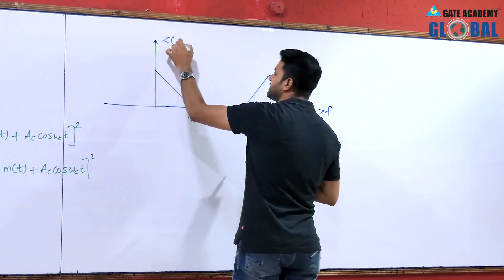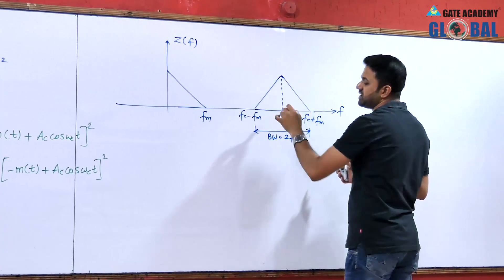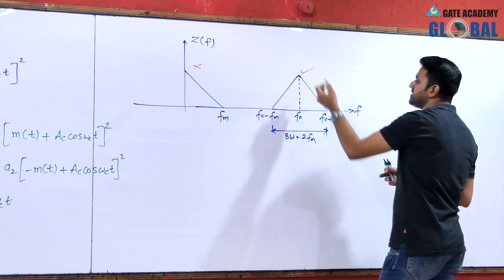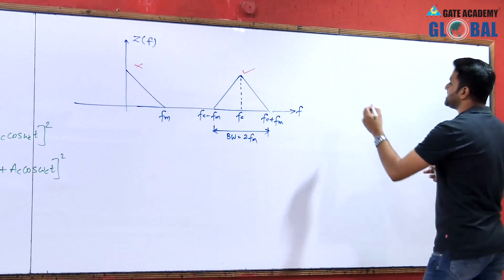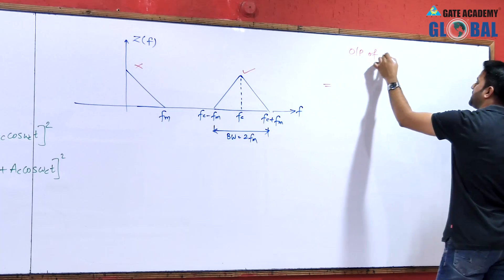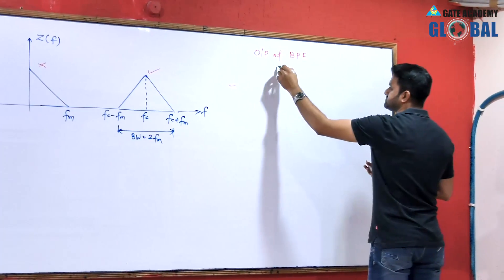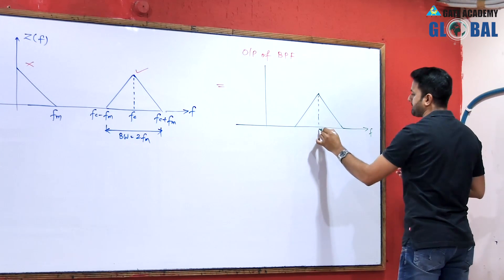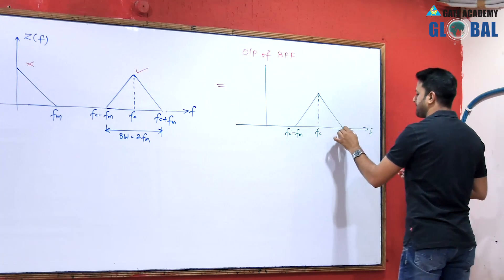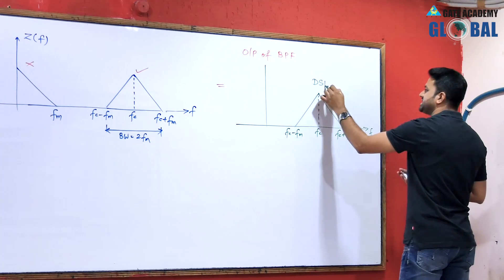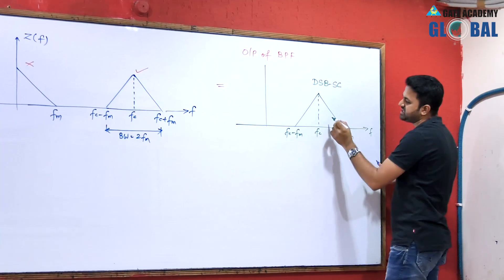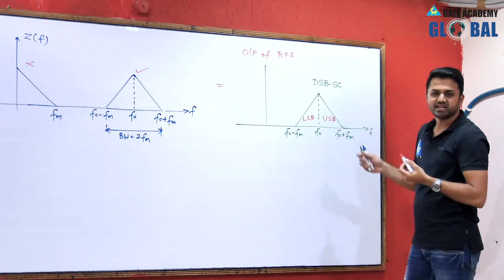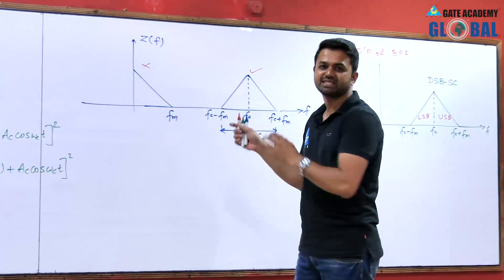When z(t) is input to the bandpass filter, the component at fc passes through while the low-frequency message component at fm is rejected. At the output we get only the spectrum centred at fc, which is the double sideband suppressed carrier — there is no component at the carrier frequency, only an upper sideband at fc + fm and a lower sideband at fc − fm.